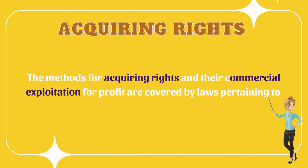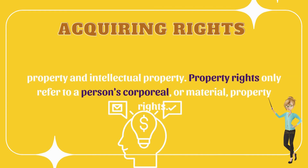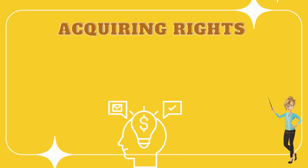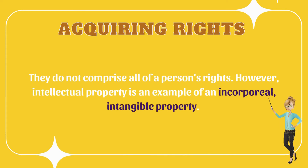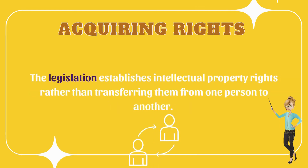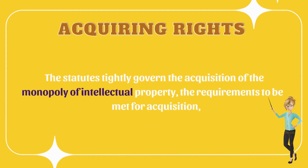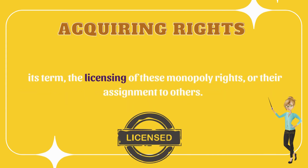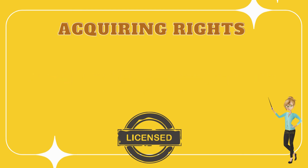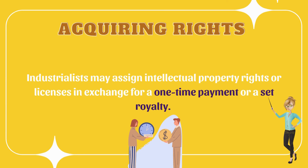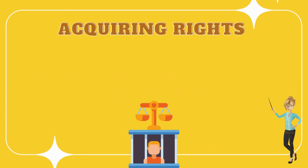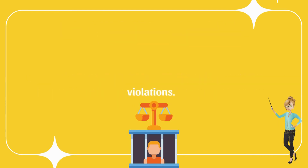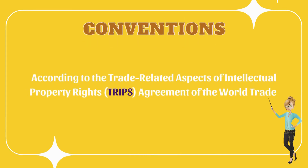Acquiring rights: the methods for acquiring rights and their commercial exploitation for profit are covered by laws pertaining to property and intellectual property. Property rights refer only to a person's corporeal or material property rights, whereas intellectual property is an example of incorporeal, intangible property. The legislation establishes intellectual property rights, and the statutes tightly govern the acquisition of the monopoly of intellectual property, its term, the licensing of these monopoly rights, or their assignment to others. Industrialists may assign intellectual property rights or licenses in exchange for a one-time payment or a set royalty. There are both civil and criminal punishments for IPR violations.